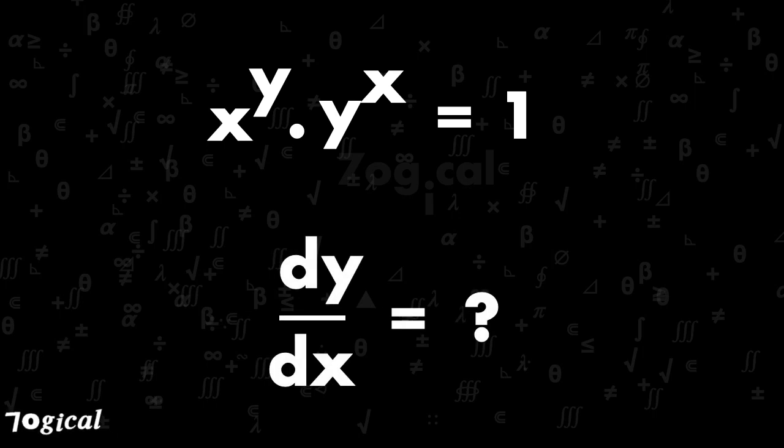Now the question is x to the power y into y to the power x is equals to 1. To solve this type of problem, we have to take log on both sides.